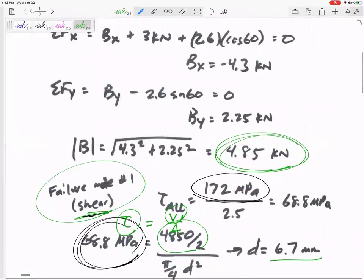So it's a little bit counterintuitive, but for problems like this you need to find the diameter that the pin fails due to bearing, the diameter that the pin fails due to shear, and the minimum diameter is going to be the larger of the two.